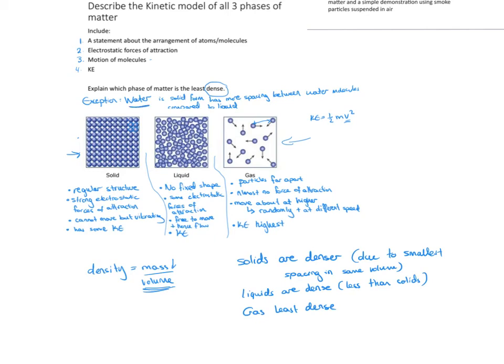Water doesn't follow this rule. Water is actually denser as a liquid than as a solid. When water freezes into a regular structure, the particles are actually further apart from each other — it's a very unique case. This is why most life on Earth exists, and it has to do with the way electrostatic forces in water behave in the solid phase.